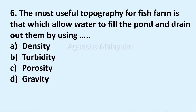Which allows water to fill the pond and drain out? Answer options: option A, density; option B, turbidity; option C, porosity; option D, gravity. Correct answer: option D, gravity.